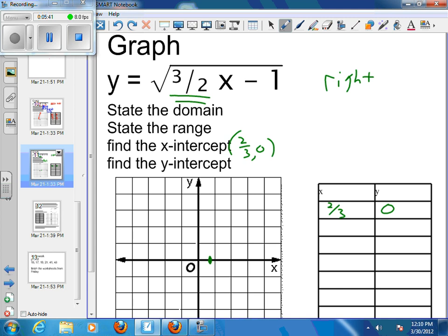Now we can find our y-intercept if we'd like. We can put in 0 for x. And so that would give us the square root of 3 halves times 0 minus 1. So 3 halves times 0 minus 1 would just be negative 1. So this point is going to be (0, negative 1). So at 0, we're at negative 1.